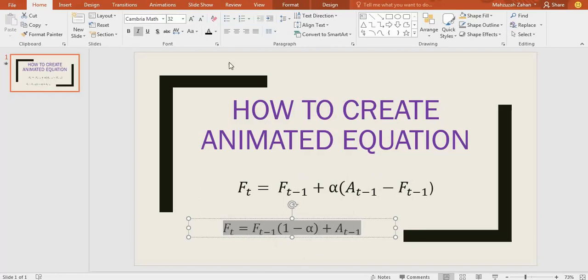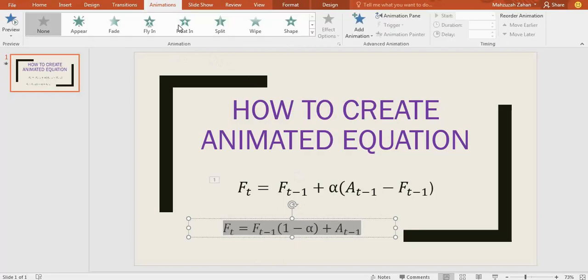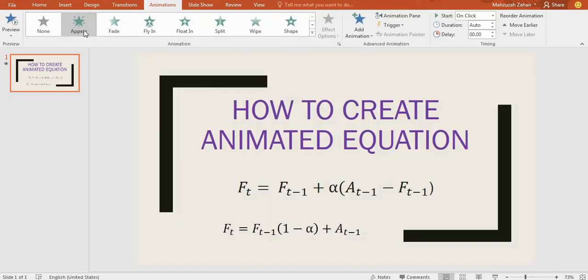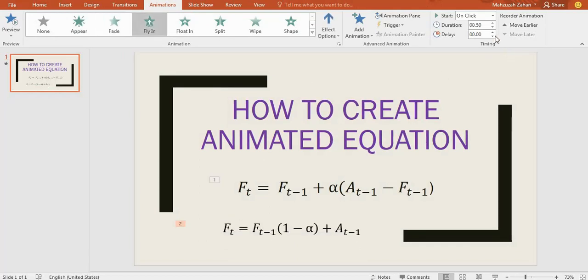Now it's time to make it animated. At first, I will go to the option Animations. Then I will select Appear, whichever you choose, or Fade or Fly In. I will take Fly In, and the duration of it will be 0.75, and delay will be 0.5.